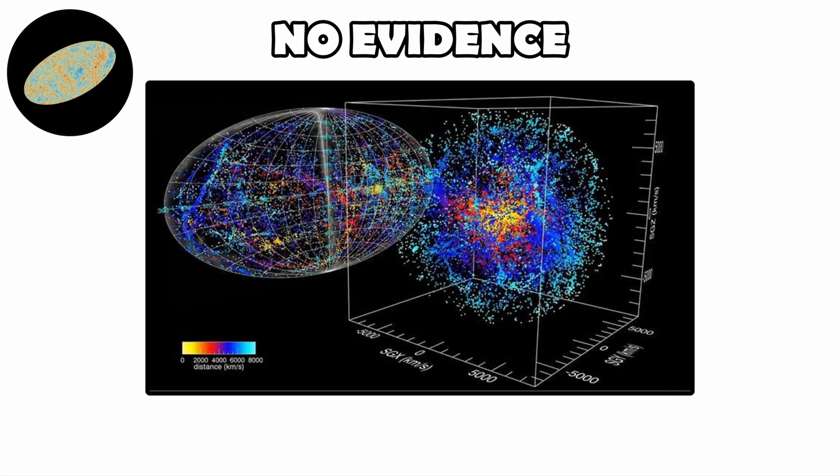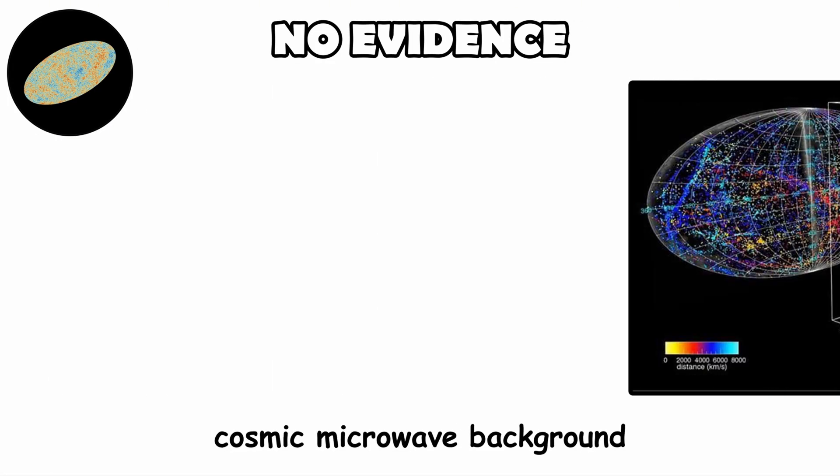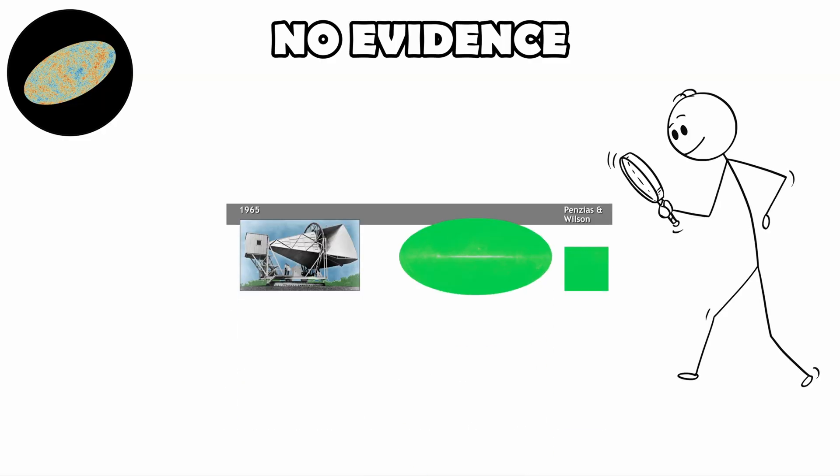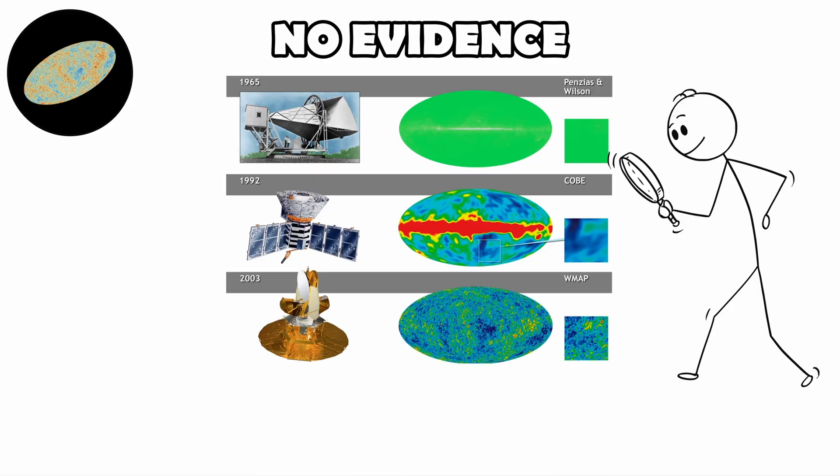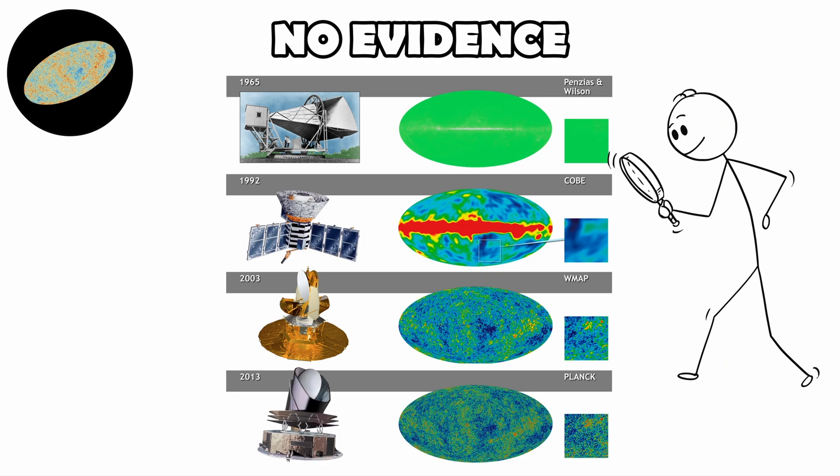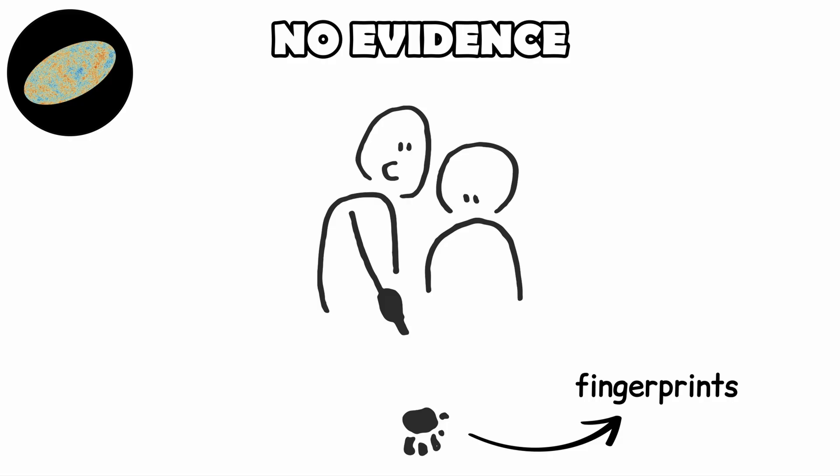Another key line of evidence is the cosmic microwave background. First detected in 1965, this faint glow is exactly what you would expect if the universe began in a hot, dense state. It has been measured with extraordinary precision by satellites such as COBE, WMAP, and Planck, showing a nearly uniform temperature across the sky with tiny fluctuations, fingerprints of the early universe's structure.